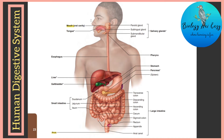The mouth leads to a portion called the pharynx. It is a short conical region that lies after the mouth cavity. The pharynx is divided into two parts: the nasopharynx, which lies behind the nasal cavities, and the oropharynx, which lies behind the mouth. The pharynx leads to the esophagus, also known as the food pipe.